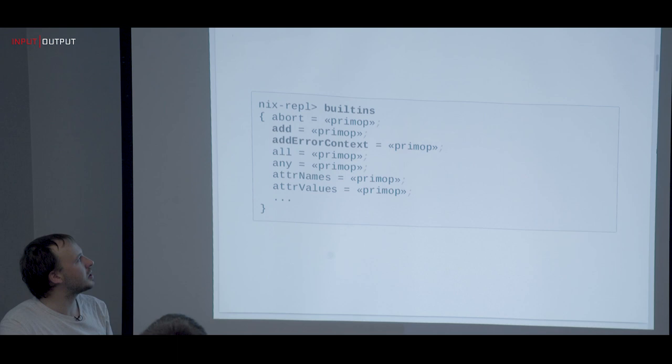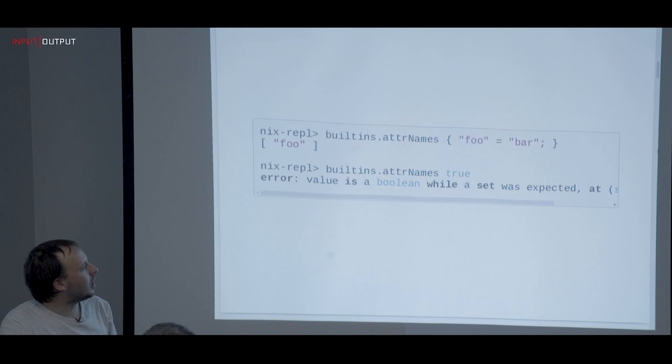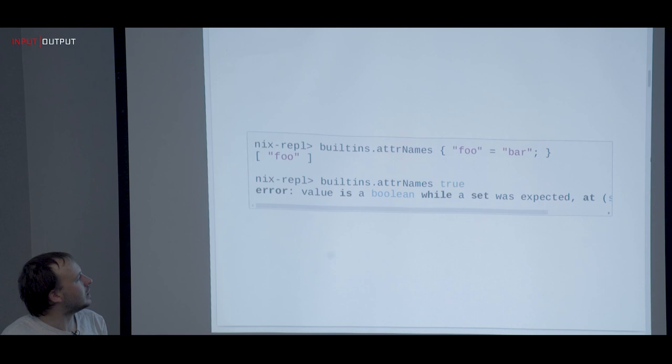In Nix, we have something called builtins — functions that come with Nix. You can see the whole list by typing `builtins`. For example, there is a function called `attrNames` which gives you all the keys in an attribute set. And if you pass it the wrong type, like a boolean, it will tell you that you're not using the right type.